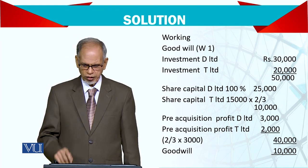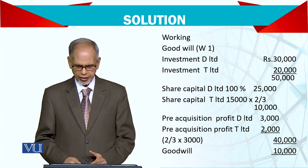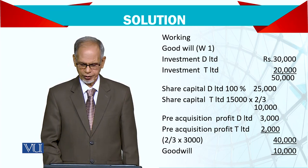Total fifty minus forty — so your goodwill comes to ten thousand.